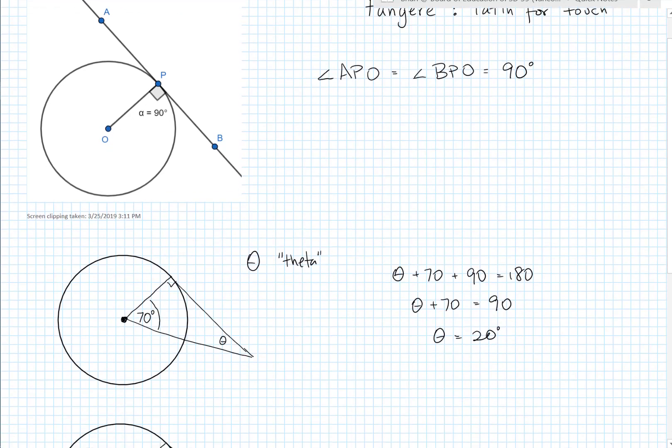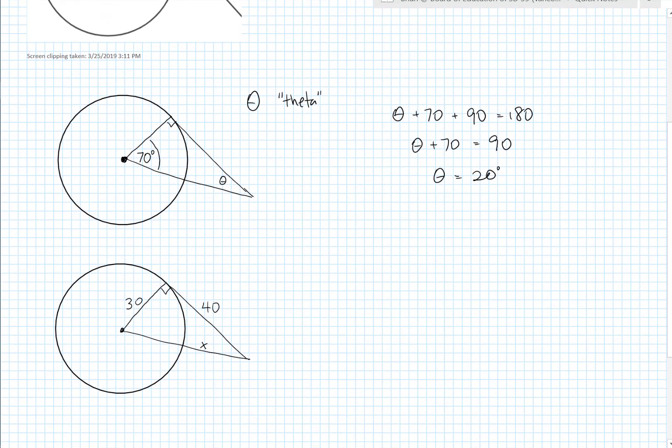Alright. Now there's all sorts of other right triangle problems we can look at. So here's one where we have a line of tangency or a segment that's tangent to the circle. And that's given as having a length of 40. The line segment has a length of 40. And then the radius is given as 30.